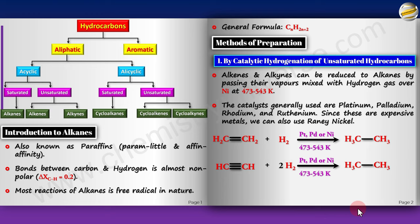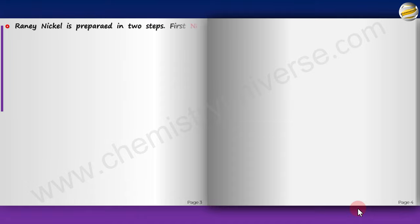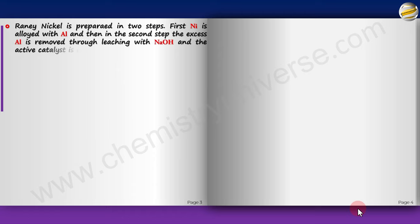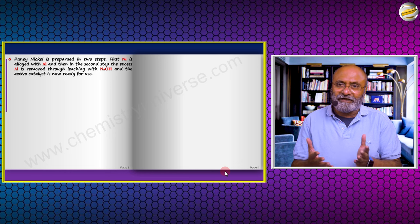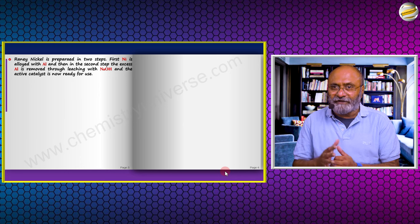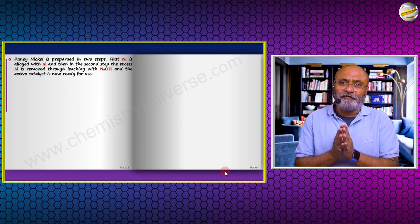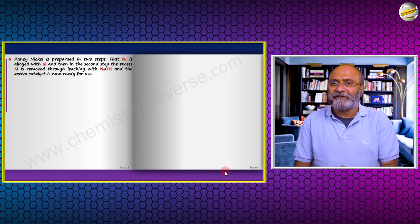Raney nickel is the poor man's catalyst, prepared in two steps. First, nickel is alloyed with aluminium. Then in the second step, excess aluminium is removed by leaching with NaOH, leaving the active nickel-aluminium alloy catalyst ready for use. It is very cheap and works well as a hydrogenation catalyst.